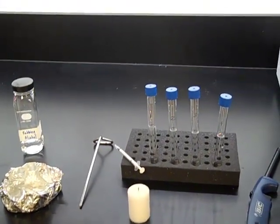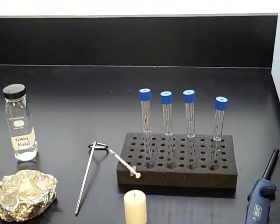You're going to need to label five nutrient agar plates with numbers 1 through 5, your initials, and the date.